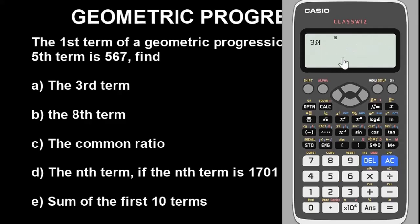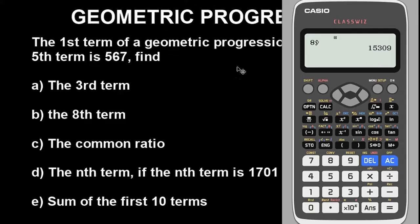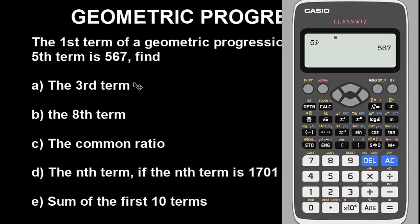Press the equals key and you will see the answer — the third term. To find the eighth term, simply go back, delete the 3, put 8, and press equals. The eighth term is 15,309. You can also verify: put 1 to get 7 (the first term), or put 5 to get 567 (the fifth term). That is how you find any term. Very accurate.